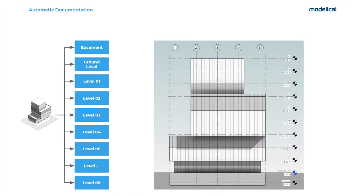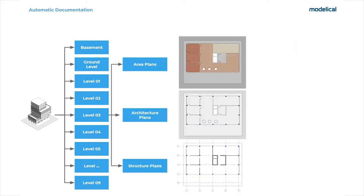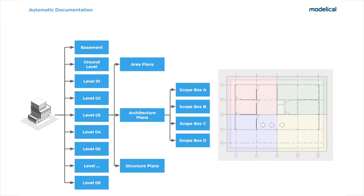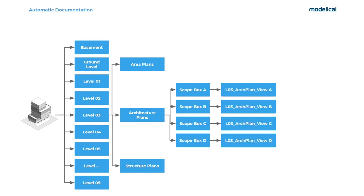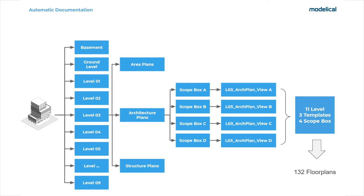This tower consists of a basement, ground level and nine levels. For each level, we want to create area plans, architecture plans and structure plans with different view templates. Since the floor plan is very big, we have divided it into four zones with scope boxes corresponding to zones A, B, C and D. So we want to create a view for each scope box from each view template and for each level. There are 11 levels, we use three view templates and four scope boxes — that is a total of 132 floor plans.